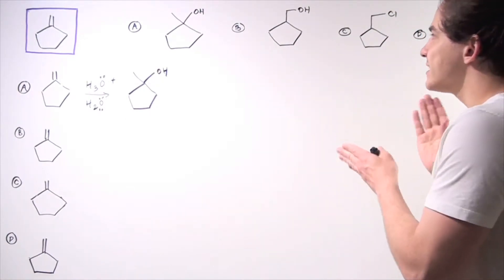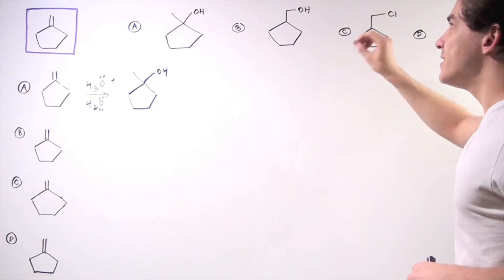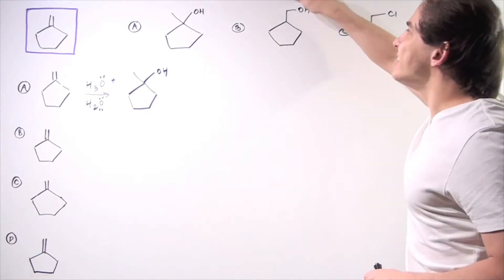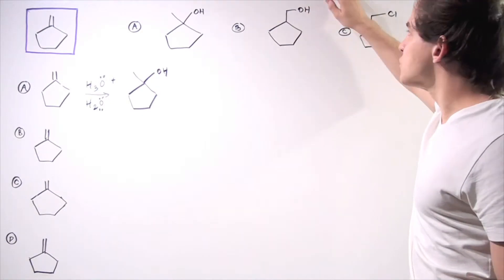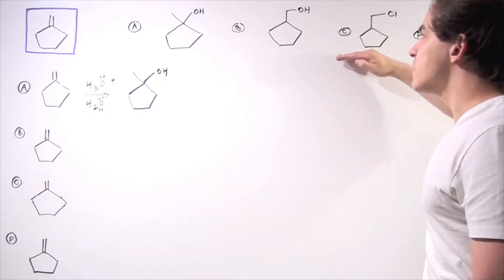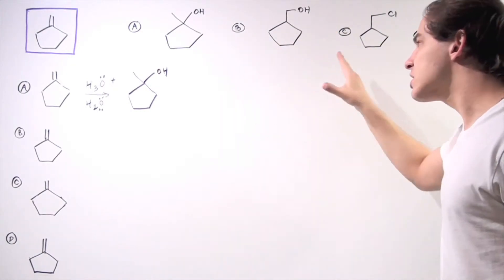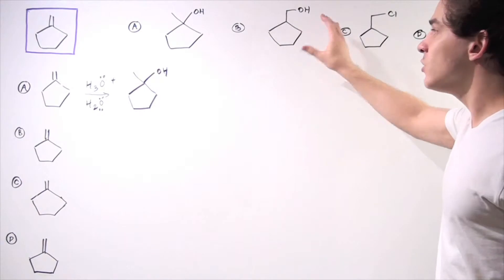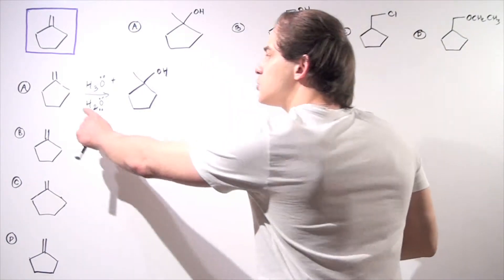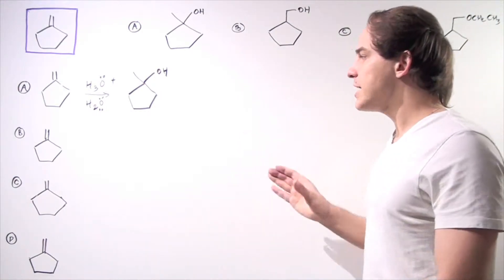Again we have an alcohol, but the hydroxide group is attached to the least substituted carbon, a primary carbon. This is the anti-Markovnikov product. Here we no longer use straightforward hydration but have to use hydroboration.